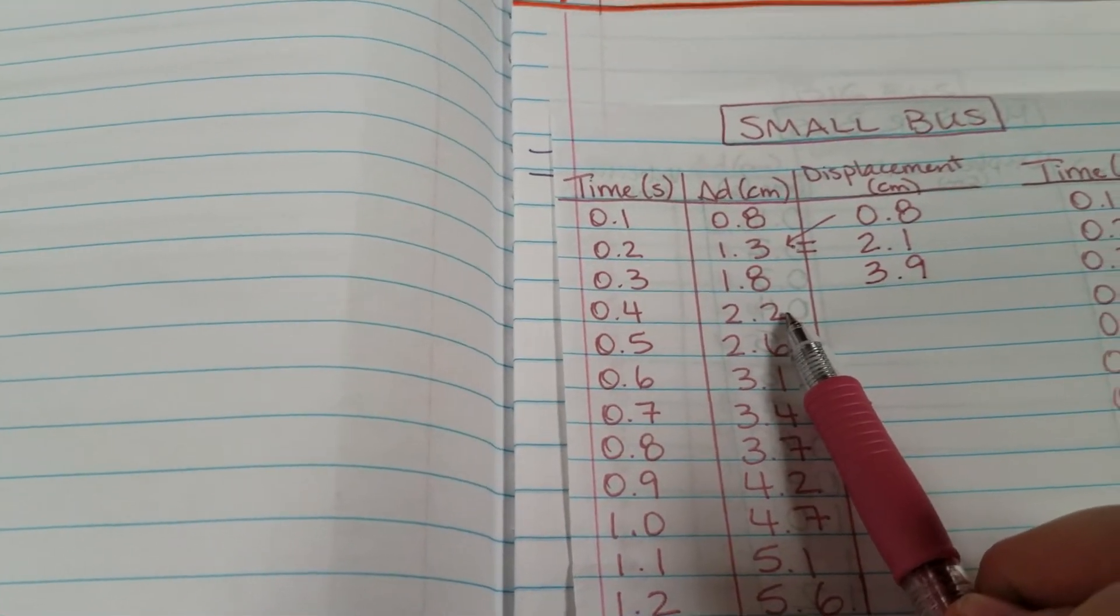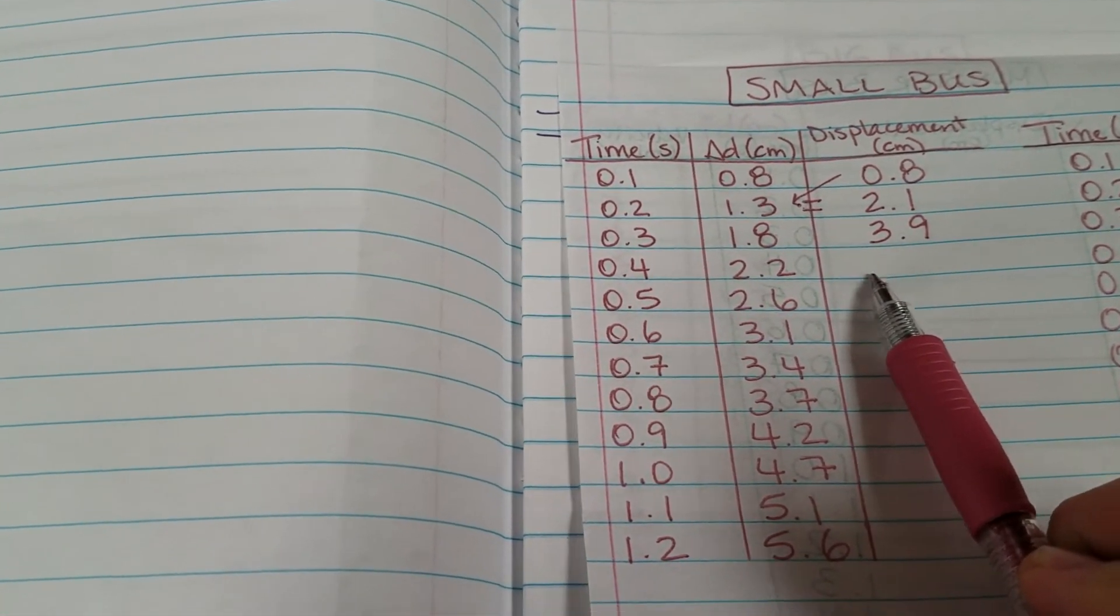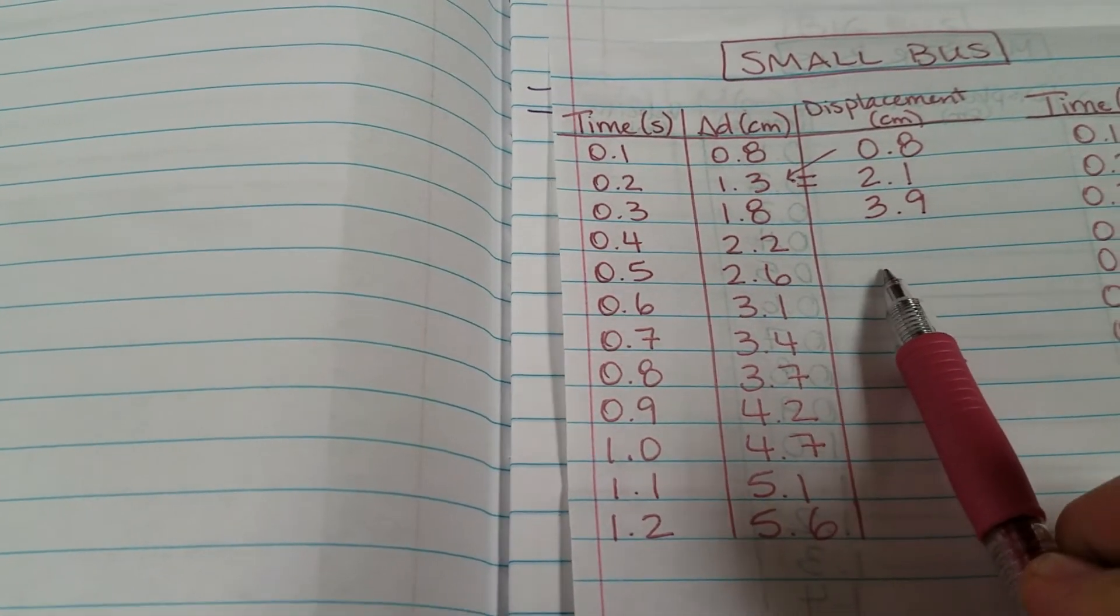3.9 plus 2.2 gives you the number here. Add 2.6 to that gives you the number here.